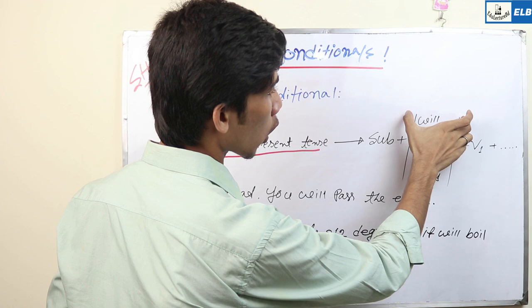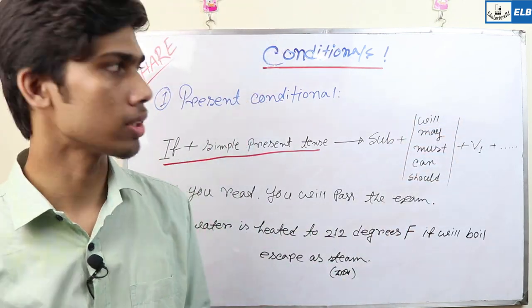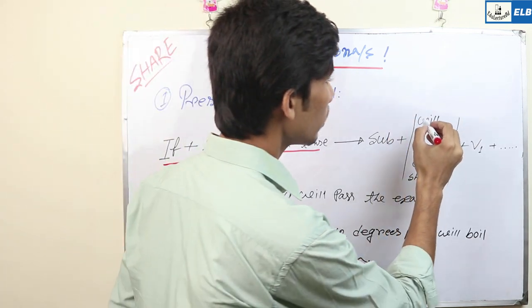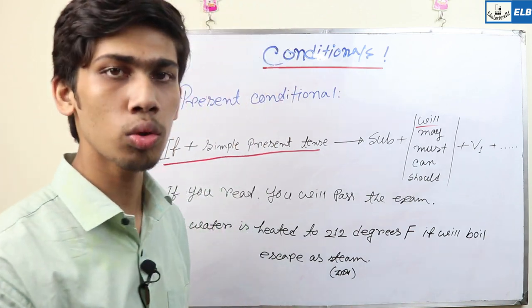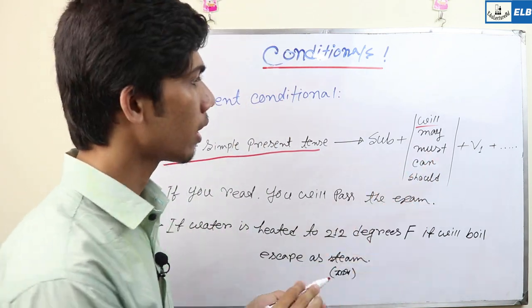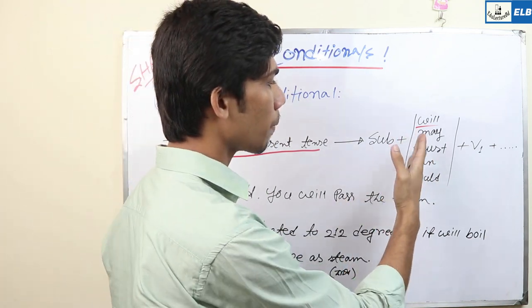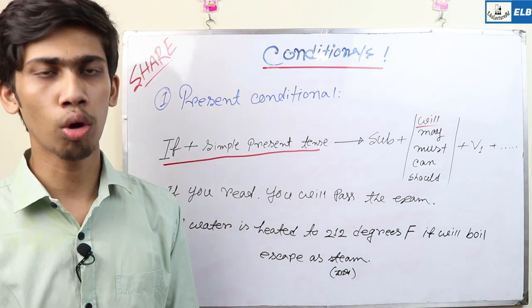Our First Conditional — School Life, College Life — there is will, but there are four changes: may, must, can, should.